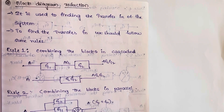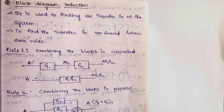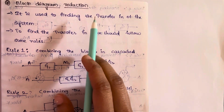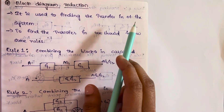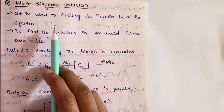Hello friends, welcome back to Witplum. Today we are going to discuss block diagram reduction, which is a very important topic in control systems — an engineering subject. By using block diagram reduction we can find the transfer function of a system.